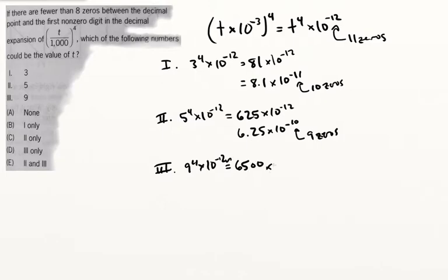I'm going to say roughly 6,500 times 10 to the minus 12, which is going to shake out to 6.5 times 10 to the minus 9. And look at that, there are 8 zeros here.